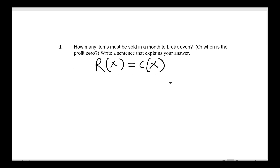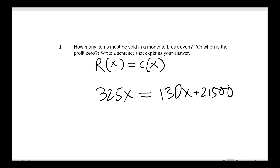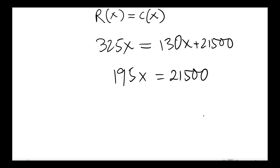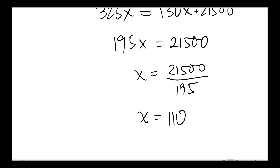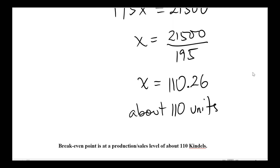We set the revenue function 325x equal to the cost function 130x + 21,500, then subtract 130x from both sides to get 195x = 21,500, and divide both sides by 195. That gives x ≈ 110.26. Since these are units produced, we round and say about 110 Kindles is the break-even production and sales level.